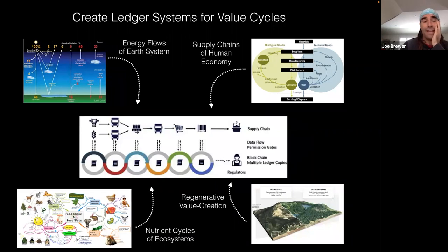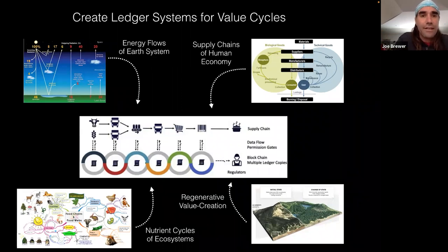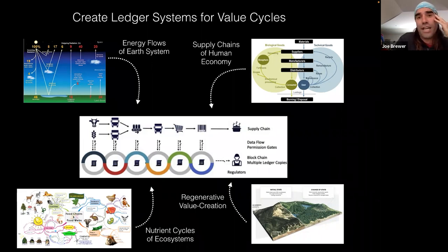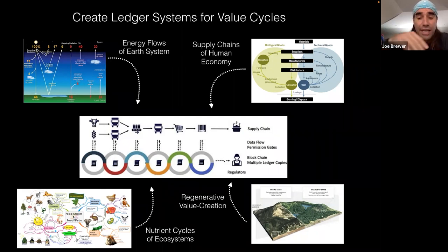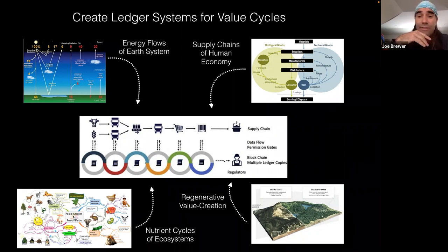Another way to think about this is to imagine a dashboard for all the information you'd need to track this process. You would follow all the energy flows of the Earth's system — rain and water, sunlight and energy, all kinds of things from the Earth. There are supply chains of human economies, material flows within your territory and in trade with other territories, nutrient cycles of ecosystems and landscape, and value creation that can occur by restoring health and diversifying the quality of material flows. All of these could become integrated with each other at the landscape scale.